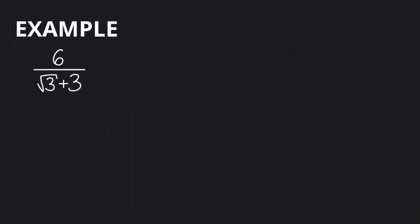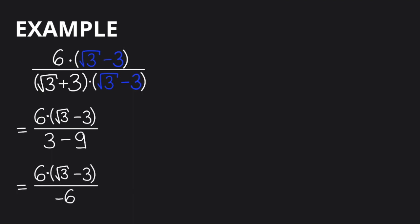Let's do an example. 6 over the square root of 3 plus 3. First, we need to invert the sign in the denominator. We use the denominator with the inverted sign and multiply this with both the top and the bottom. Now we have 6 open parentheses, square root of 3 minus 3, close parentheses, over 3 minus 9. Let's simplify the denominator. This gives us minus 6.